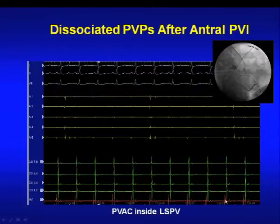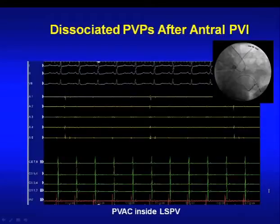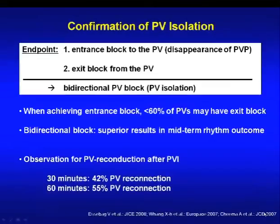Most of the time, we have to prove our endpoint using stimulation maneuvers — the first being entrance block, the second being exit block — summarized as bidirectional PV block or PV isolation.